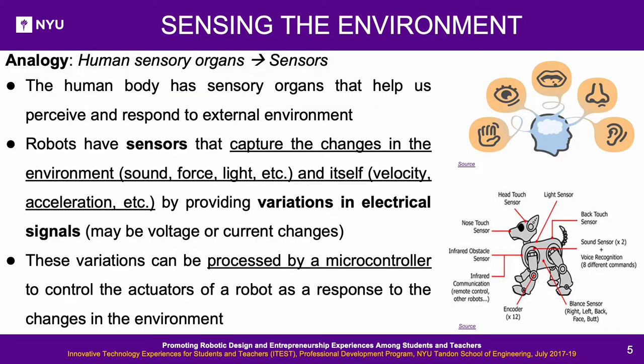Sensing the environment: the human body has sensory organs that help perceive and respond to the external environment. Eyes are specialized for sight, ears for hearing, tongue for taste, and nasal passages for smell. The brain computes and processes the received data, and the body responds to manipulate the environment. Similarly, robots have sensors that capture changes in the environment — sound, force, light — and in themselves — velocity, acceleration — by providing variations in electrical signals, maybe voltage or current changes, that can be processed by a microcontroller to control actuators.